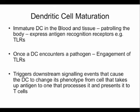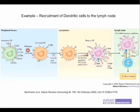Once the dendritic cell encounters a pathogen, it is usually triggered by toll-like receptors. Dendritic cells express high levels of all the different toll-like receptors, and there are different classes of dendritic cells that express particular groups of those toll receptors. This causes a whole signaling cascade inside the dendritic cell that causes it to change its phenotype and function — from an immature cell patrolling the tissues to one that will capture antigen, process it, present it, and travel from the tissue to the lymph nodes.